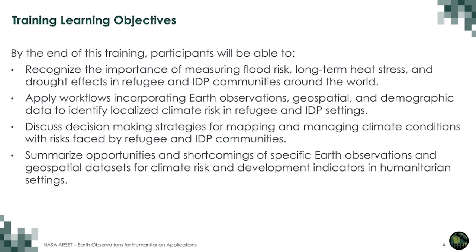By the end of this training, participants will be able to recognize the importance of measuring flood risk, long-term heat stress, and drought effects in refugee and IDP communities around the world. Apply workflows incorporating Earth observations, geospatial, and demographic data to identify localized climate risk in refugee and IDP settings. Discuss decision-making strategies for mapping and managing climate conditions. Summarize opportunities and shortcomings of specific Earth observations and geospatial datasets for climate risk and development indicators in humanitarian settings.